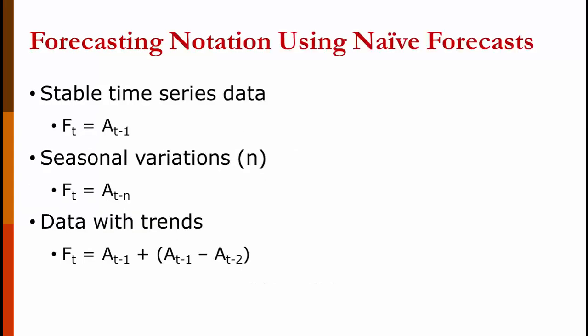I talk about naive forecasting more as a way to introduce the notation than because it's terribly useful these days. You see three equations on the screen. Let's take a look at them. The first one says f sub t is equal to a sub t minus 1. What that means is the forecast in any time period is equal to the actual in the period before that. So, your forecast in time period 10 would equal your actual in time period 9. So basically, you're just saying that demand is equal to last period.